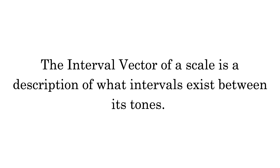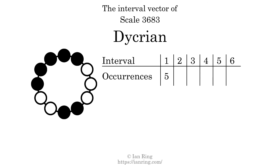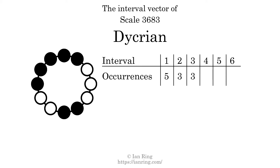The interval vector of a scale is a description of what intervals exist between its tones. There are 5 intervals with the size of 1 semitone, here, here, here, here, and here. There are 3 intervals with the size of 2 semitones, here, here, and here. There are 3 intervals with the size of 3 semitones, here, here, and here. There are 4 intervals with the size of 4 semitones, here, here, here, and here. There are 4 intervals with the size of 5 semitones, here, here, here, and here.